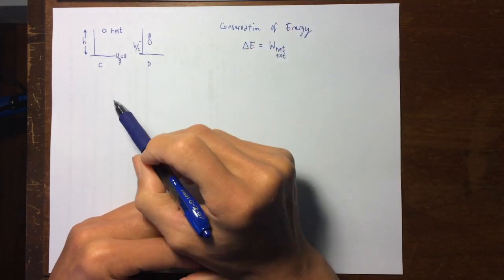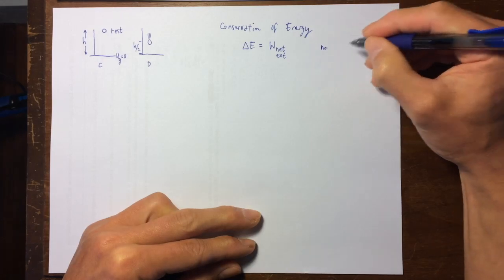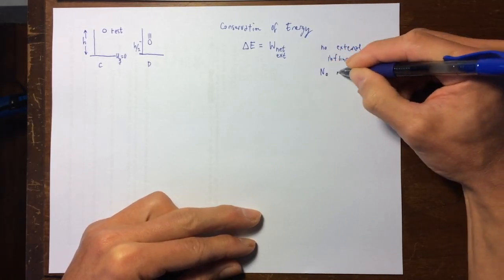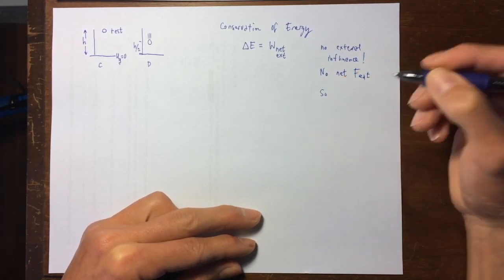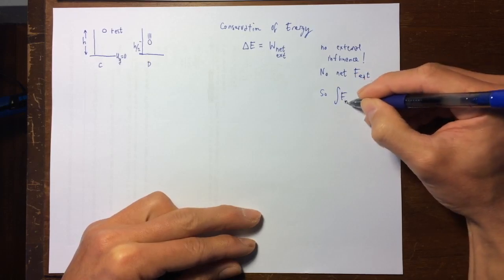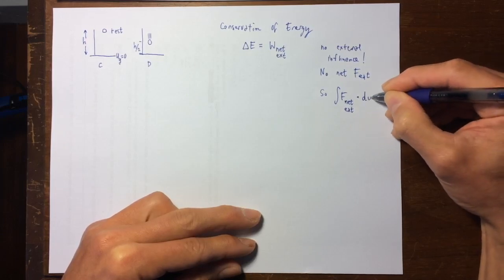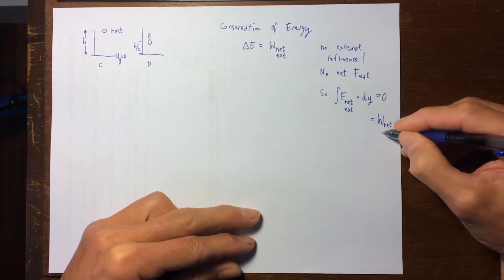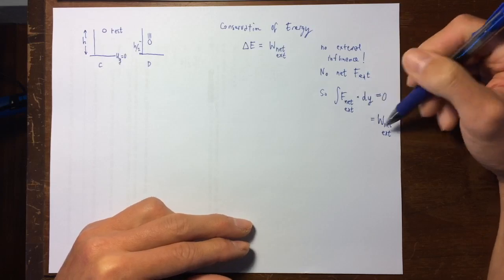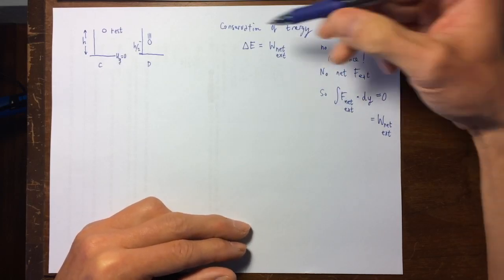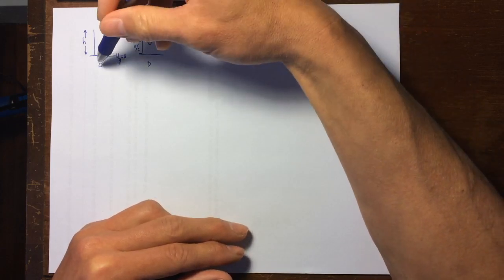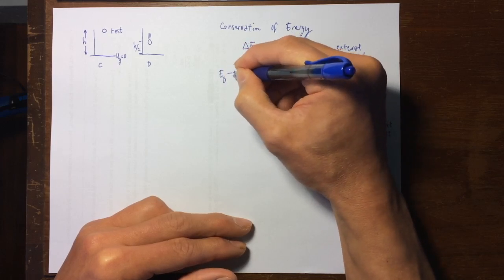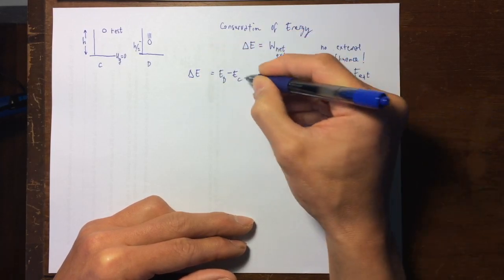The integral of the net external force dotted over the falling distance is only going to be zero. There is no net external force, so there is no work done by a net external force. There are no external agents adding or subtracting energy to my system from C to D. So ED minus EC — the change in energy we are studying — is zero.